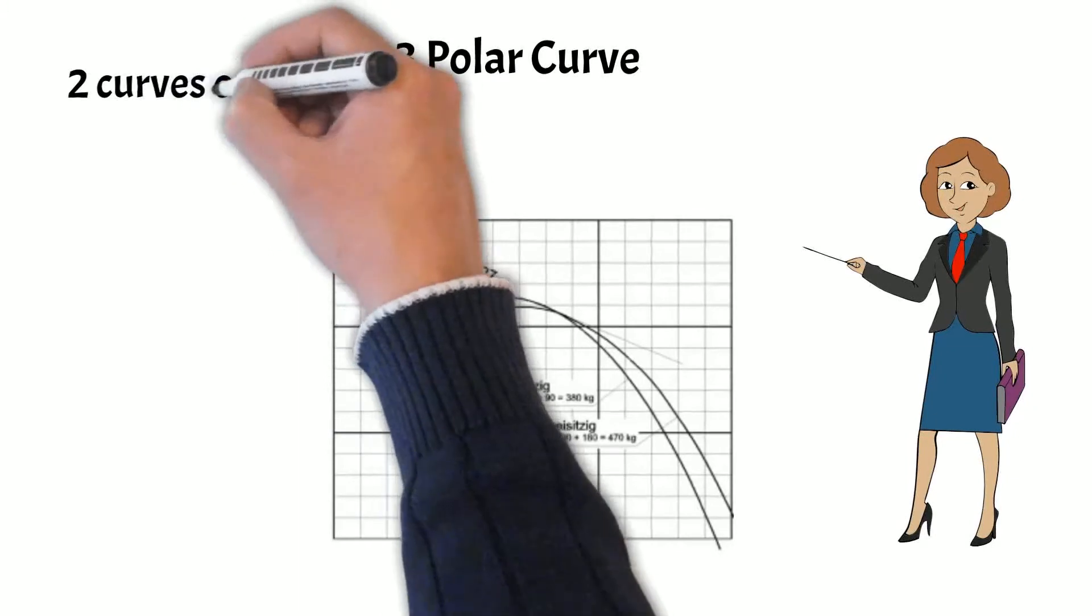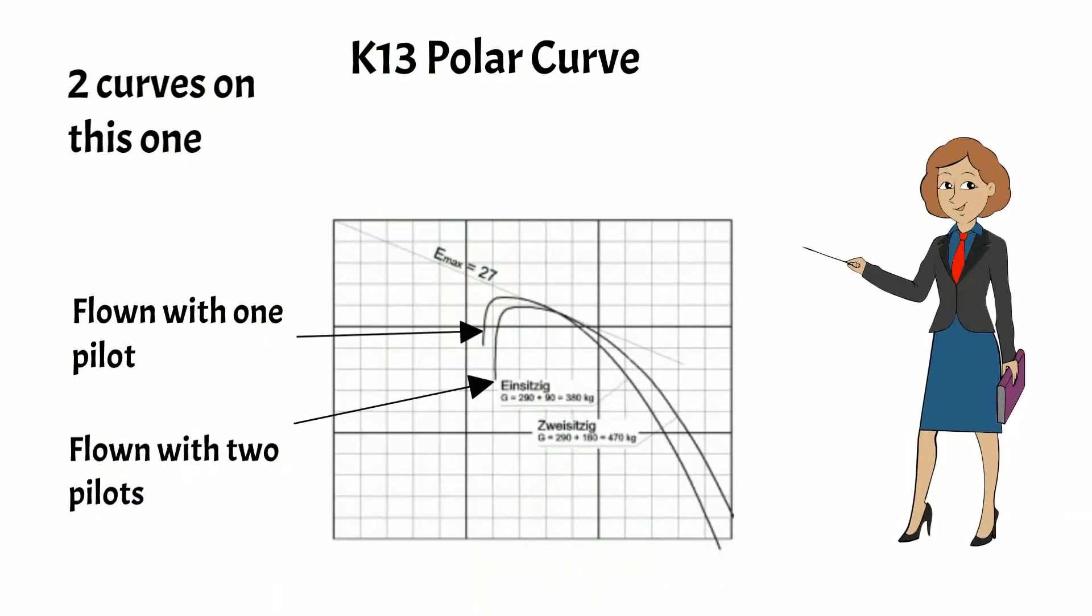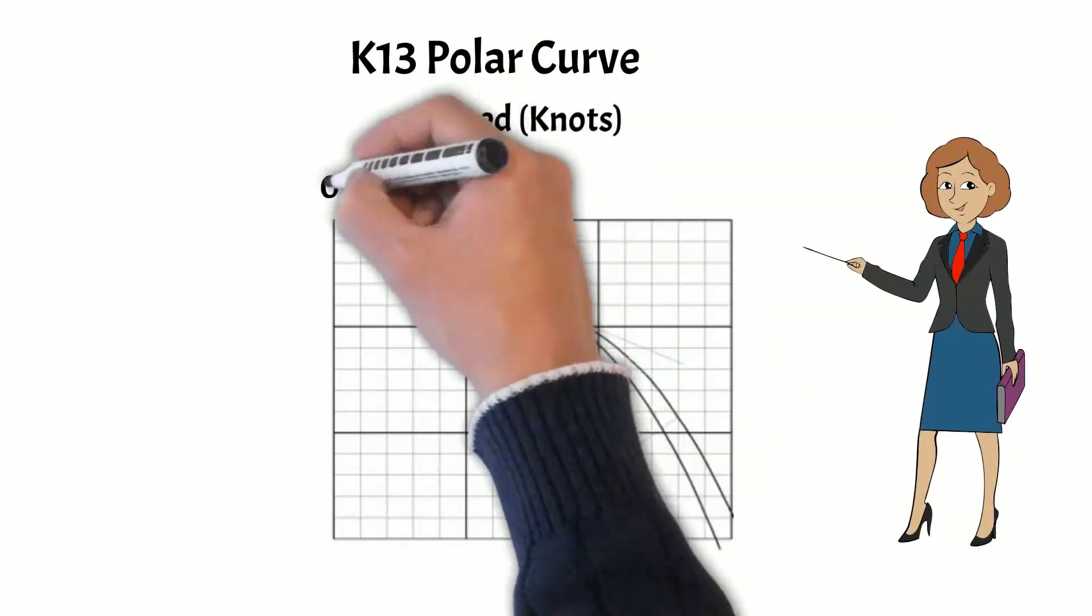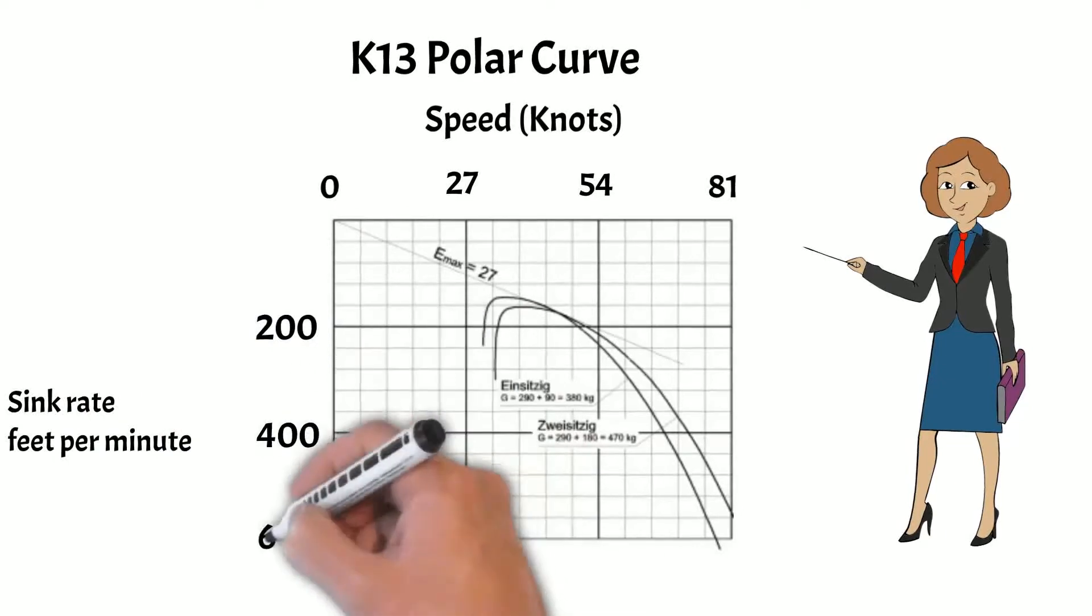There are two curves on this graph. Flown with one pilot. Flown with two pilots. Airspeed is shown in knots. Sink rate in hundreds of feet per minute.